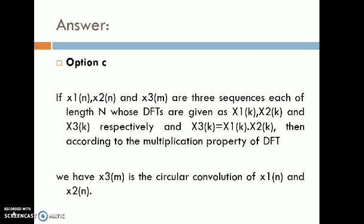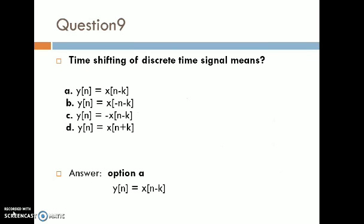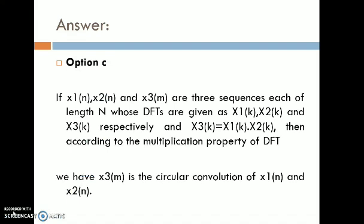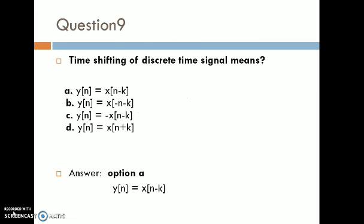Question number nine: time shifting of a discrete time signal means — A) y(n) = x(n-k); B) y(n) = x(-n-k); C) y(n) = -x(n-k); D) y(n) = x(n+k). Time shifting means shifting the inner variable by some value. The correct answer is option A: y(n) = x(n-k).